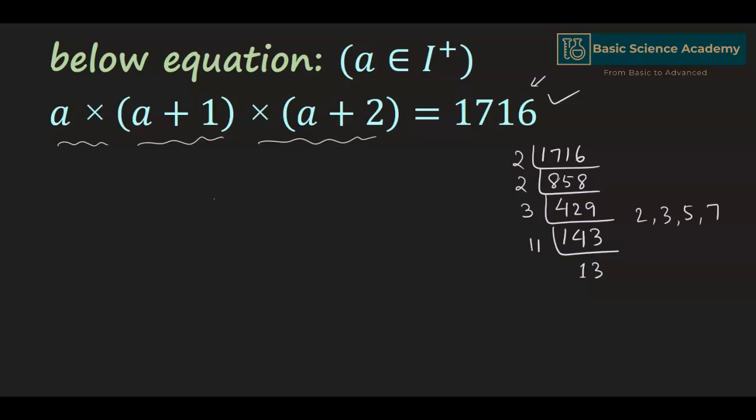Hence the prime factorization of 1716 is 2 × 2 × 3 × 11 × 13.